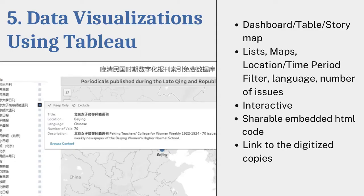Next, we moved to our final stage, which is data visualization using Tableau. As you can see in the photo on the left, this shows how searches can be filtered and some of the data that users will see when using this tool — including title, location, language, number of volumes, and a brief description. And at the bottom, there's a browse content option so you can actually look at the periodicals on Internet Archive themselves. It was really exciting to create a tool in Tableau that was so interactive and allowed a dashboard with filter options. Our previous projects have been on ArcGIS Online, which was very interactive and a great tool, but we were excited to continue branching out and experiment with Tableau.